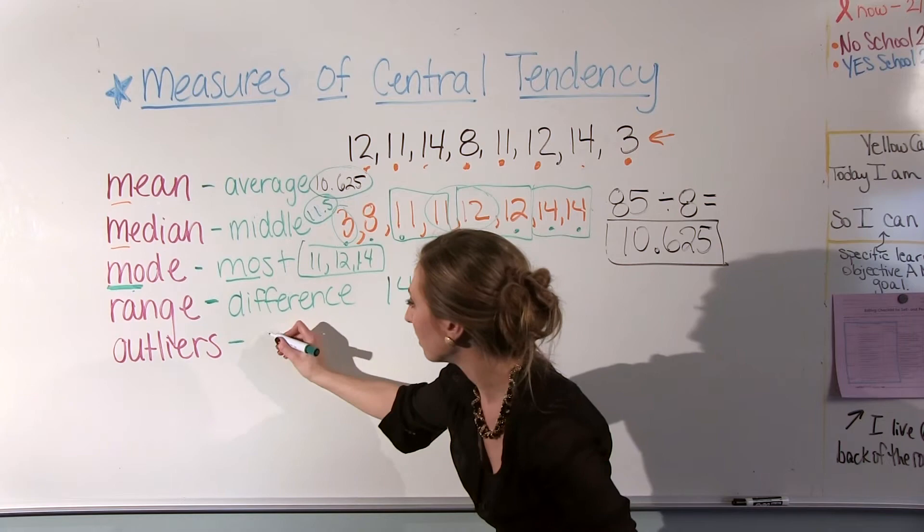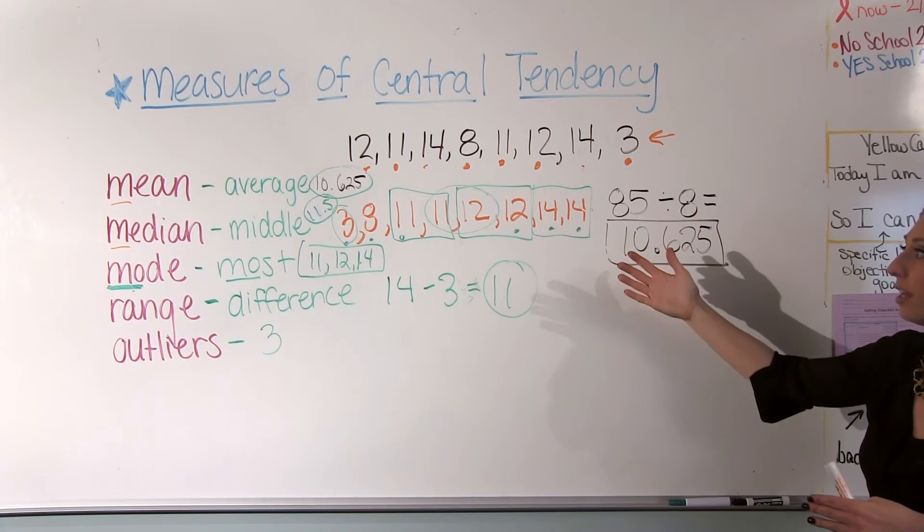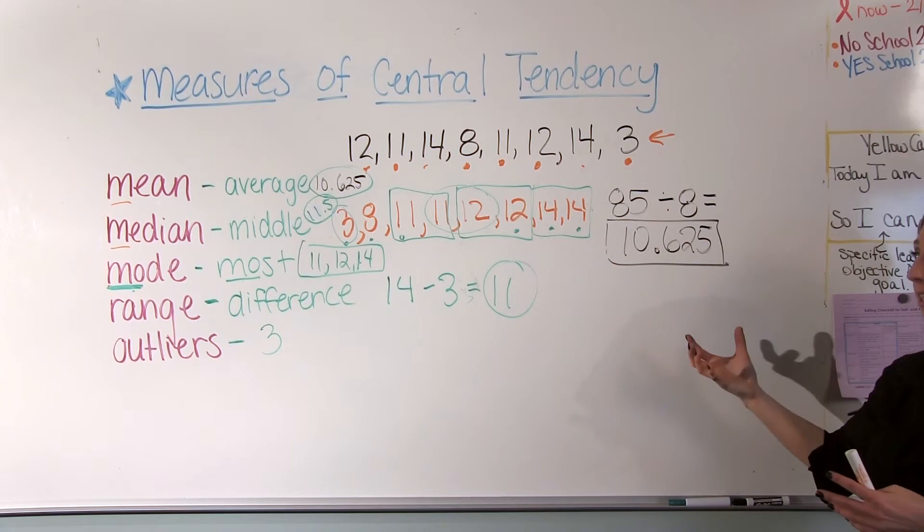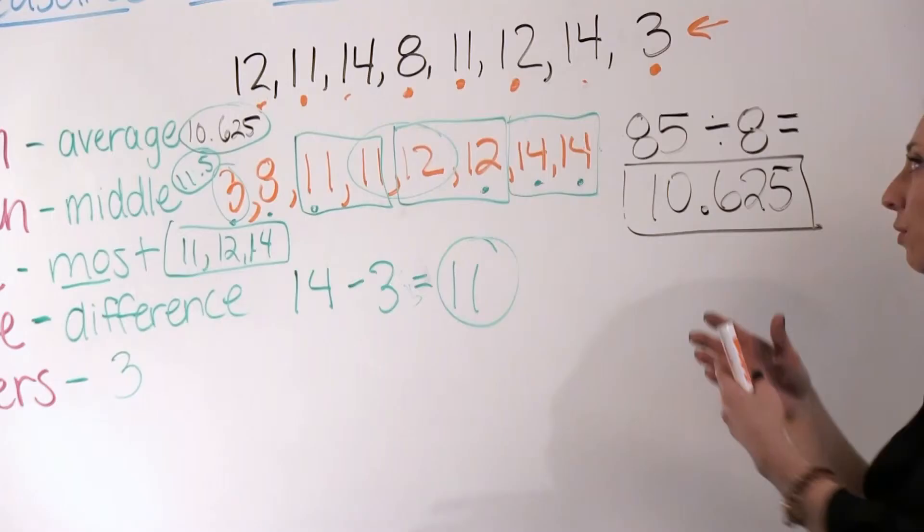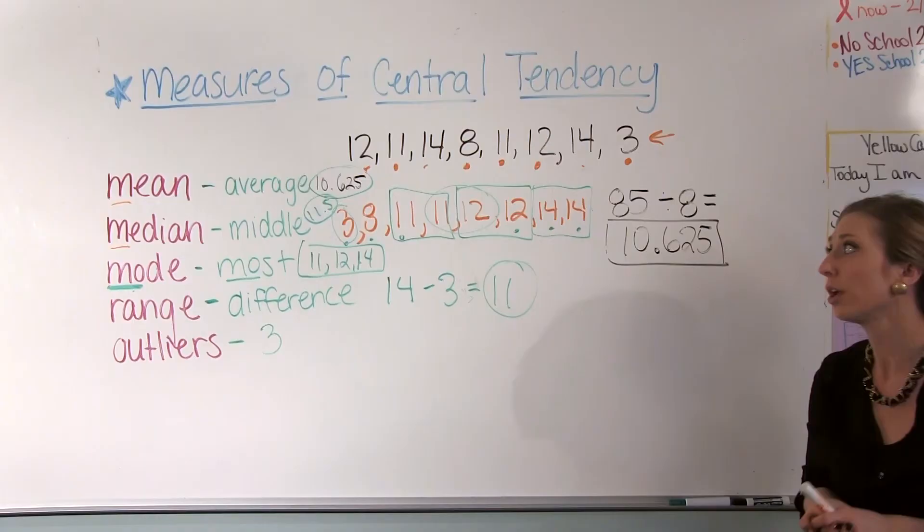But all of these processes you can do with just one list of numbers, and they're basically measuring where most of our data is. And it gives us kind of a number to generalize what our data says.